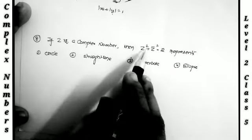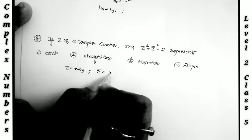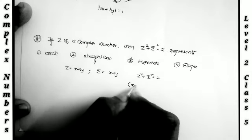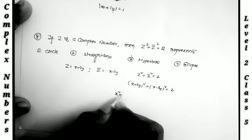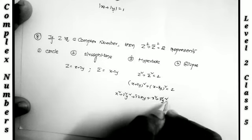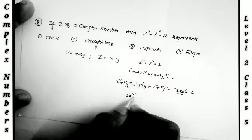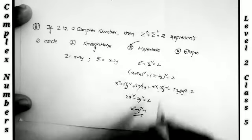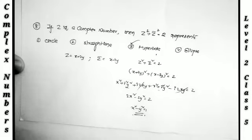Last problem: if z is a complex number and z² + z̄² = 2, what does it represent? Substituting z = x + iy and z̄ = x - iy: (x + iy)² + (x - iy)² = 2. Expanding: x² + 2ixy - y² + x² - 2ixy - y² = 2. The imaginary parts cancel, giving 2x² - 2y² = 2, so x² - y² = 1. This is a rectangular hyperbola of the form x² - y² = k².